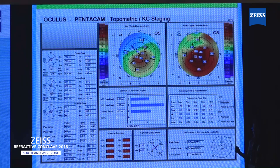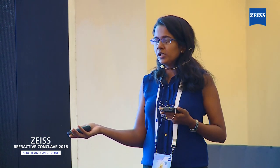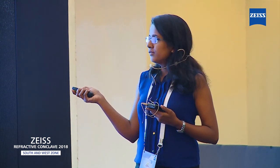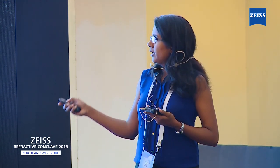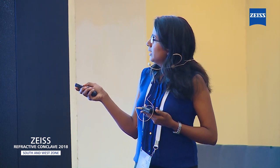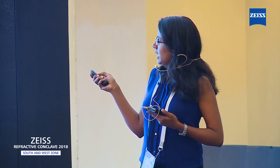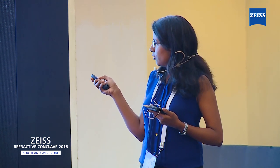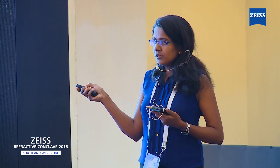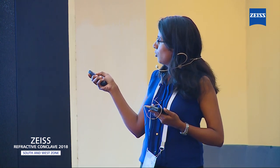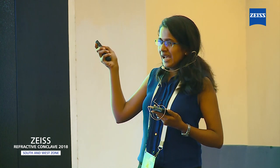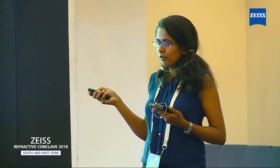Another important software available is the keratoconus staging display. It includes the balanced ABCD keratoconus classification, which has come into vogue in the last two years. It also gives irregularity indices, including index of surface variance, height asymmetry, vertical asymmetry, height decentration, keratoconus index, and central keratoconus index. Based on this, the machine itself gives you a topographic keratoconus classification, whether the keratoconus falls under level 1, 2, 3, or 4.